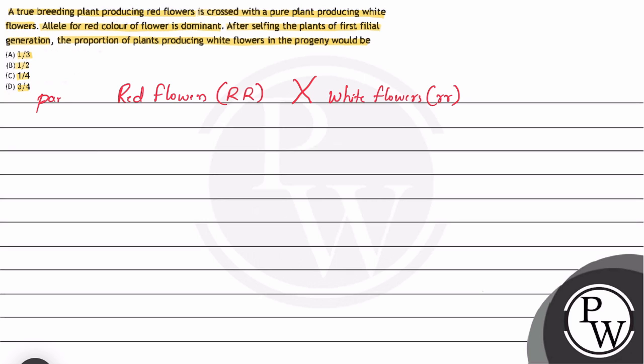This is parental generation. We will look at the gametes. Red flower gametes are capital R. White flower gametes are small r. So in F1 generation, we will have offspring with capital R small r. That is heterozygous red flowered plants. Why red flower plants? Because red is dominant over white. So F1 generation has red flowers.